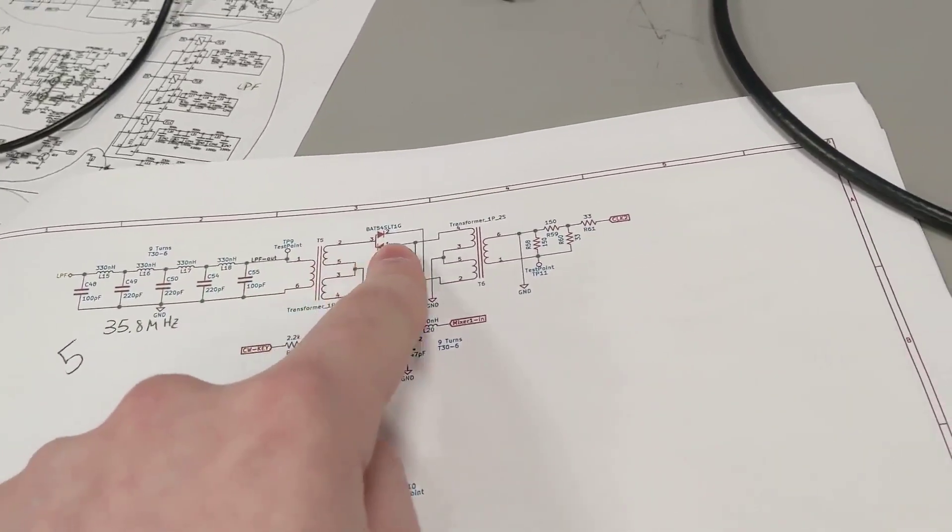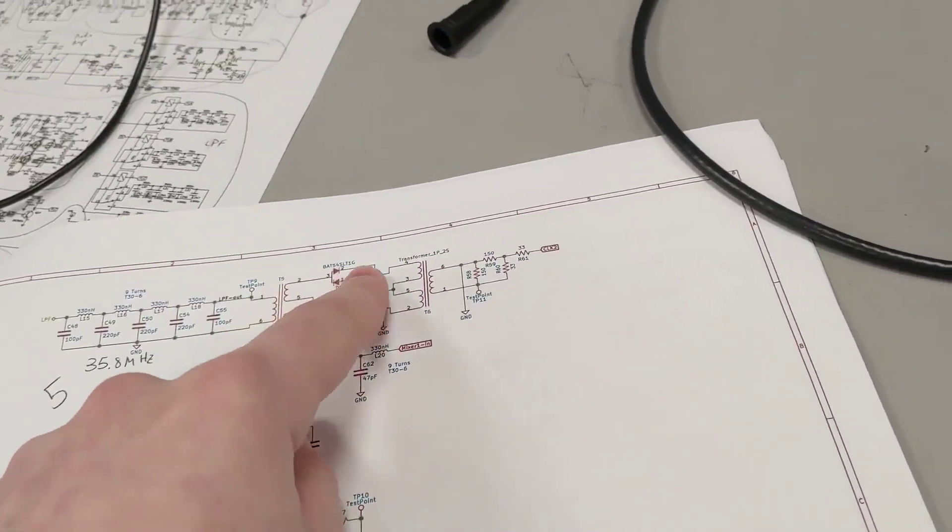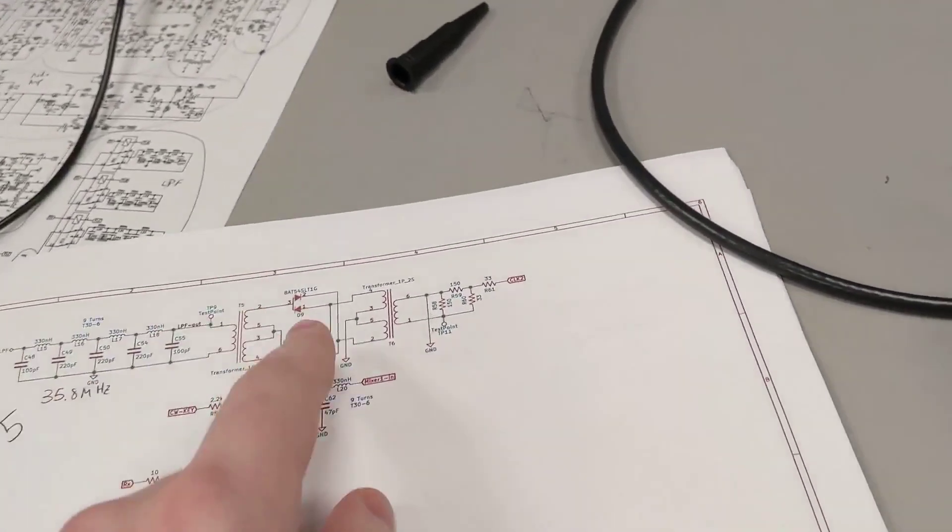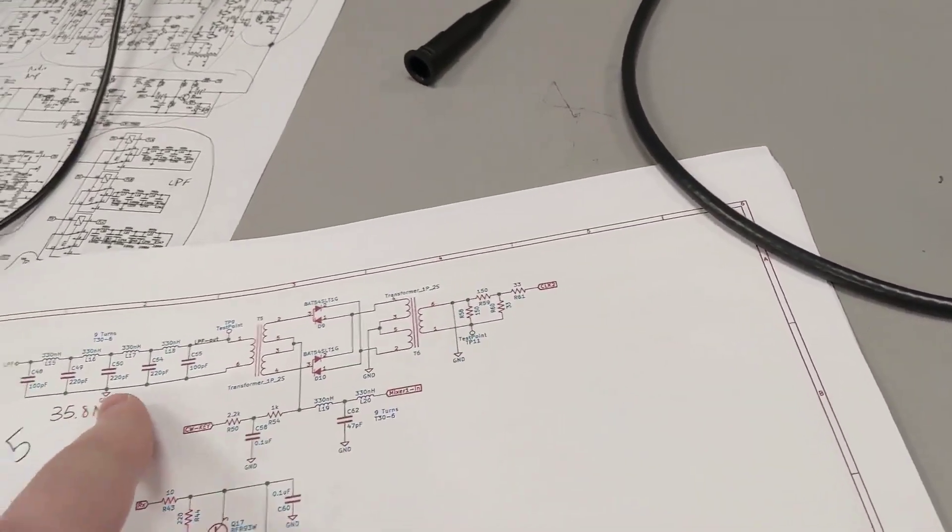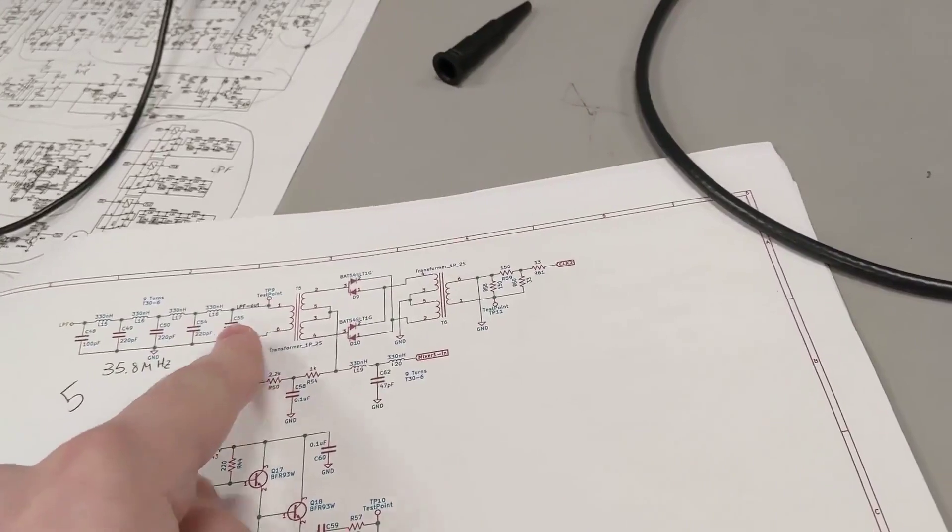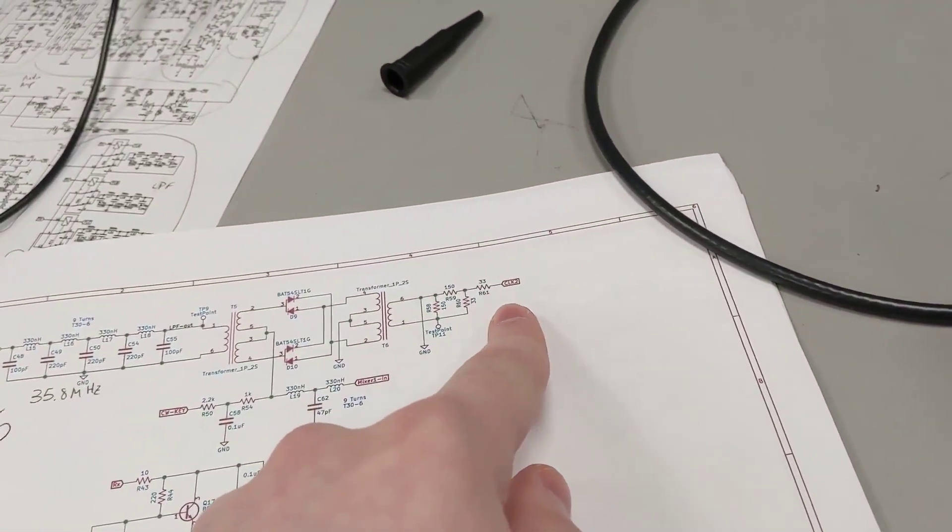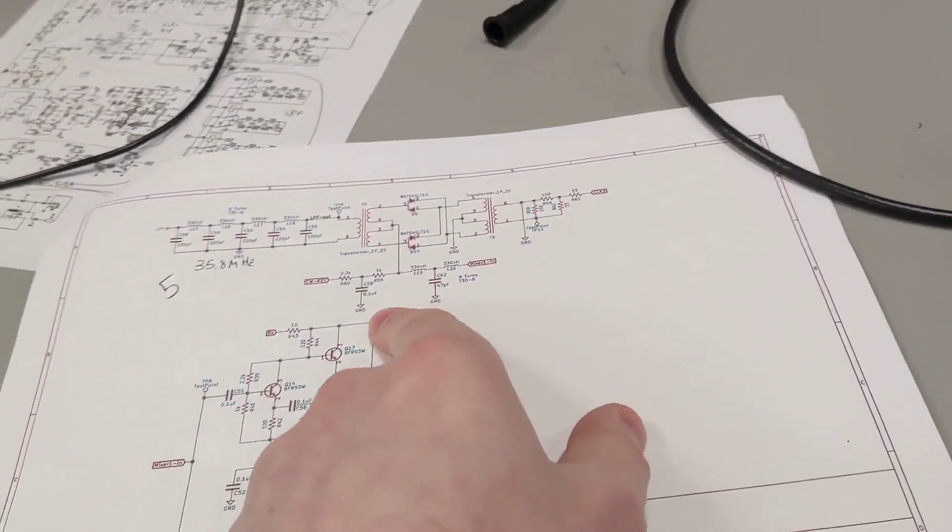It's going through this ring diode mixer. Now I'm not going to go over how a ring diode mixer works. W2AEW has a really good video explaining how that works. And as we can see, our signal comes in here. It gets mixed with this clock signal. And that clock signal is going to convert whatever is coming through here to 45 MHz.